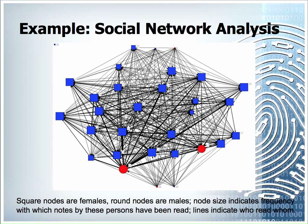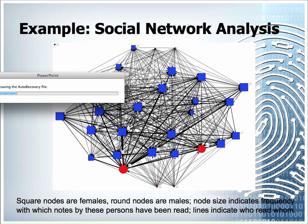The lines connecting the nodes indicate who has read whose notes. If an arrow points in one direction — and it's a little hard to see the arrowheads here, but you can see one where my cursor is waggling — it means this person has read that person's note. If the arrows point in both directions, it is bi-directional, meaning both have read each other's notes. One-way interactions are good for the transmission of simple information, while bi-directional communication is essential for the transfer of complex information.